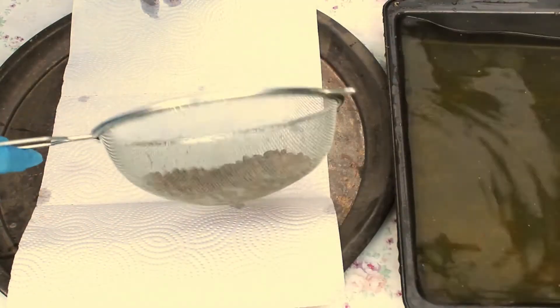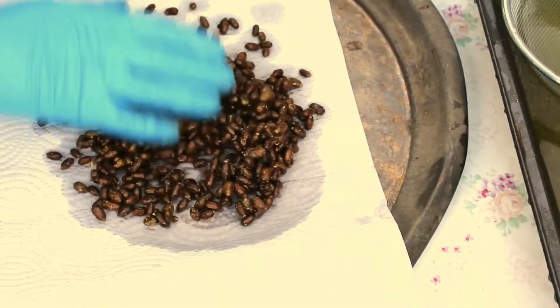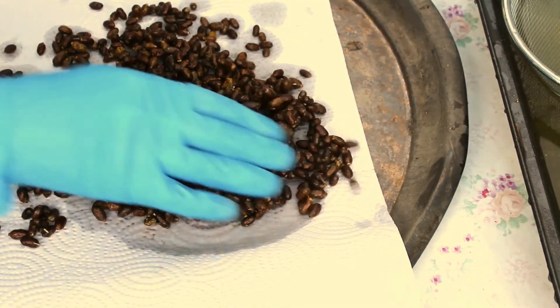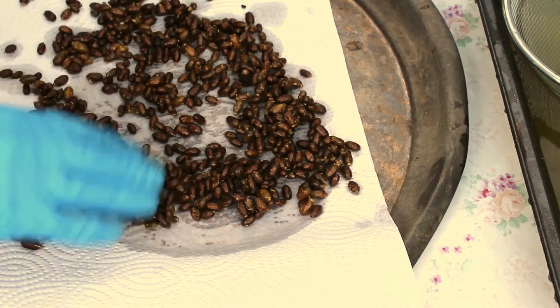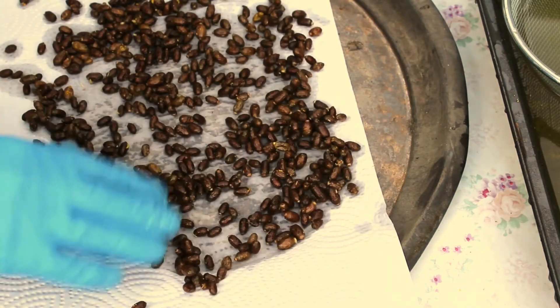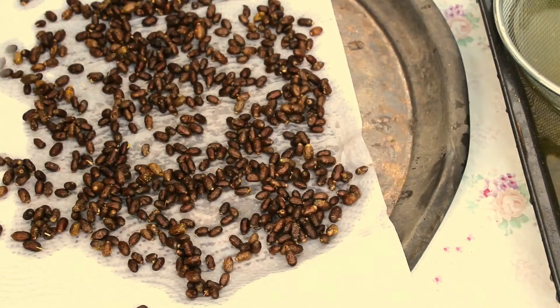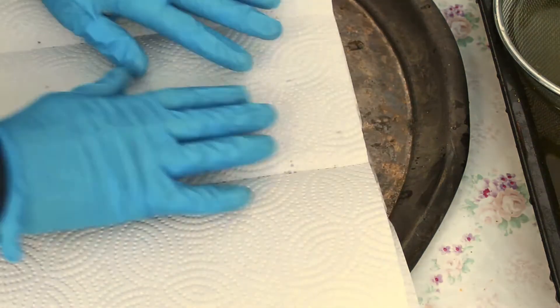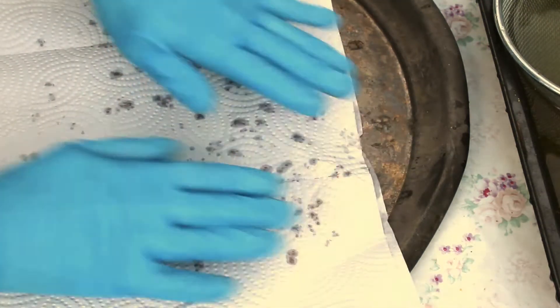The next step involves spreading the cocoons out evenly on a tray for drying. They can be covered with more paper towel to begin the drying process. It's important to only use light pressure, let the paper towel do its job.